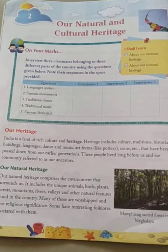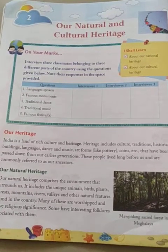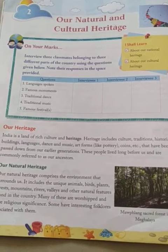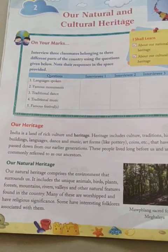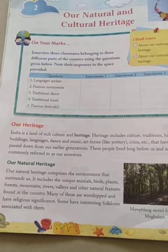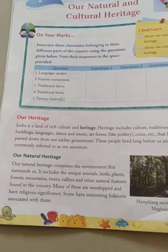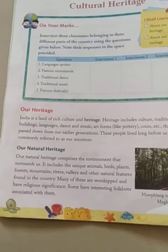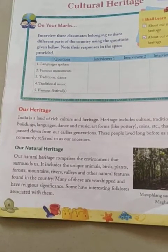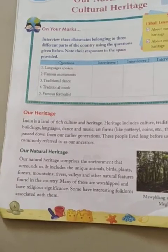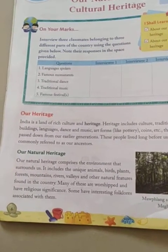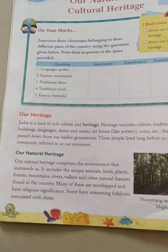Good morning students. In the last period of SST, we started the second lesson — our natural and cultural heritage. Natural heritage comprises the environment that surrounds us. It includes the unique animals, birds, plants, forests, mountains, rivers, valleys and other natural features found in the country.